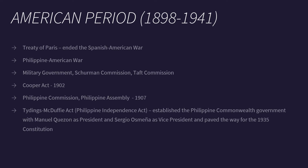The first election was held in 1907 and the legislature held its first session. The Tydings-McDuffie Act, or the Philippine Independence Act, established the Philippine Commonwealth government with Manuel Quezon as president and Sergio Osmeña as vice president, and paved the way for the 1935 Constitution.